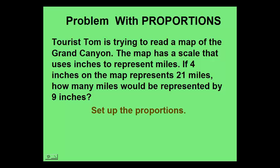Let's rewrite this problem as a proportion. We'll start with the ratio 4 inches to 21 miles. So 4 to 21. That would equal 9 inches to however many miles 9 inches represented. We'll use the letter A to show that's what we're trying to figure out.